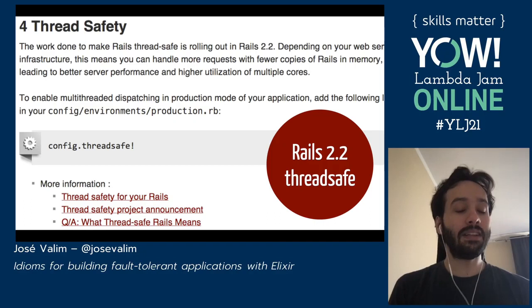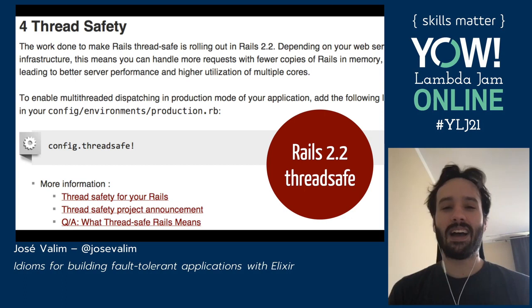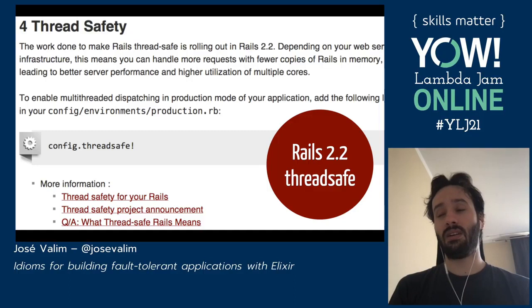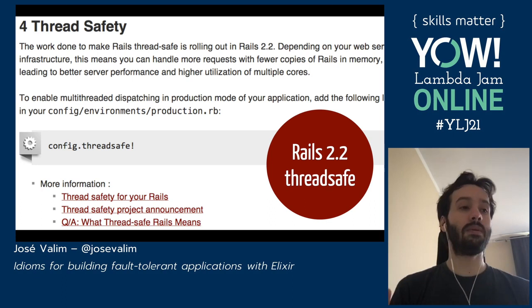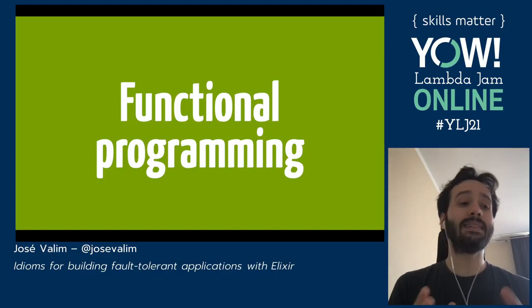I like to say that in this journey to figure out how to tackle concurrency, there were two points of no return — two points where I said, wait, this changes everything, and it changed the way I thought and approached software. The first of those things is functional programming. Functional programming means different things to a lot of people, but to me at the time it meant two things.